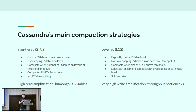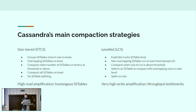One of the benefits of leveled compaction is that it splits SSTables into small components, but if you have a lot of writes, it has a very low throughput limit. Can we have something that's a combination of these two — that has the good sides of both, works well for read-optimized and write-optimized workloads, and doesn't create humongous SSTables? This is what the unified compaction strategy is hoping to do.